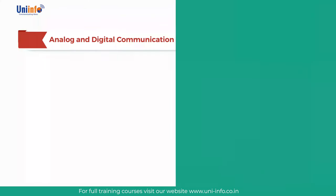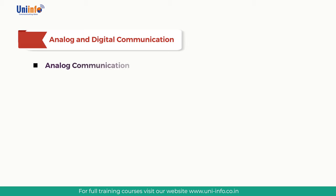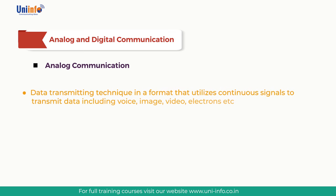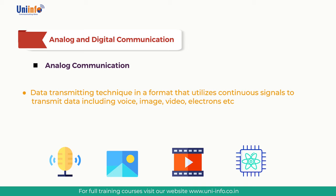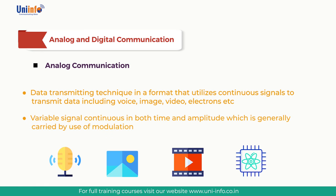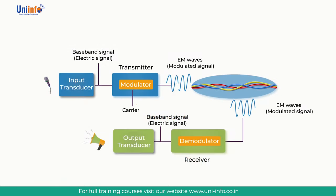Analog communication is a data transmitting technique that utilizes continuous signals to transmit data including voice, image, video, and electrons. An analog signal is a variable signal, continuous in both time and amplitude, which is generally carried by use of modulation. Analog communication involves transferring an analog waveform containing information with no digitization at any point between two users. Typical examples where analog information is transmitted in this fashion are music broadcast radio, voice citizen band radio, amateur radio, walkie-talkies, and cellular radio.